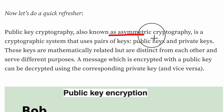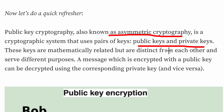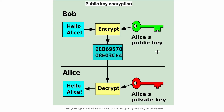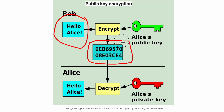The second concept to understand is public key cryptography, also known as asymmetric cryptography. In public key cryptography we have a key pair — a public key and a private key — which are mathematically related numbers. If you encrypt something with a public key, you can decrypt it using the private key, and vice versa. For example, Bob wants to send a message to Alice: he encrypts the message with Alice's public key, and that message can only be decrypted by Alice using her private key.